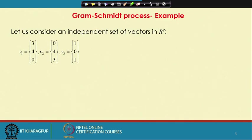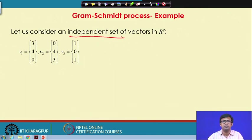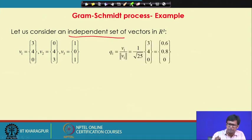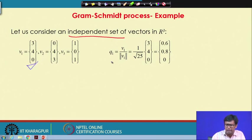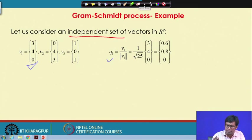Now we take an example with vectors [3, 4, 0], [0, 4, 3], and [1, 0, 1]. These are independent vectors and we can quickly check that. The first step is to take the first vector V1 and get Q1 by dividing by its length. The length of [3, 4, 0] is √(9+16) = 5, so Q1 = [0.6, 0.8, 0].